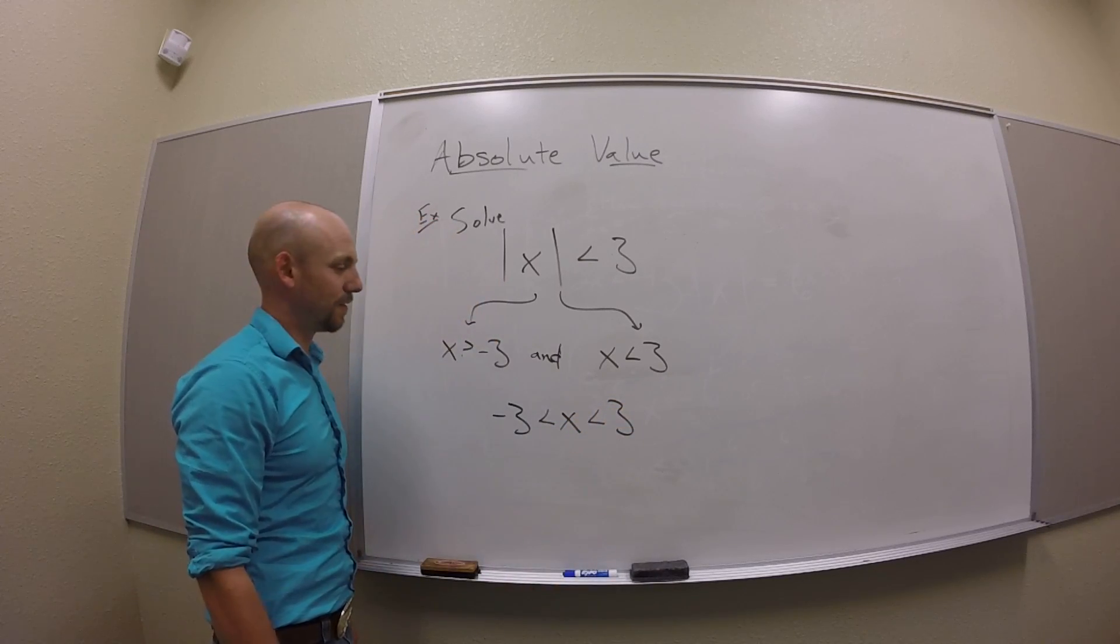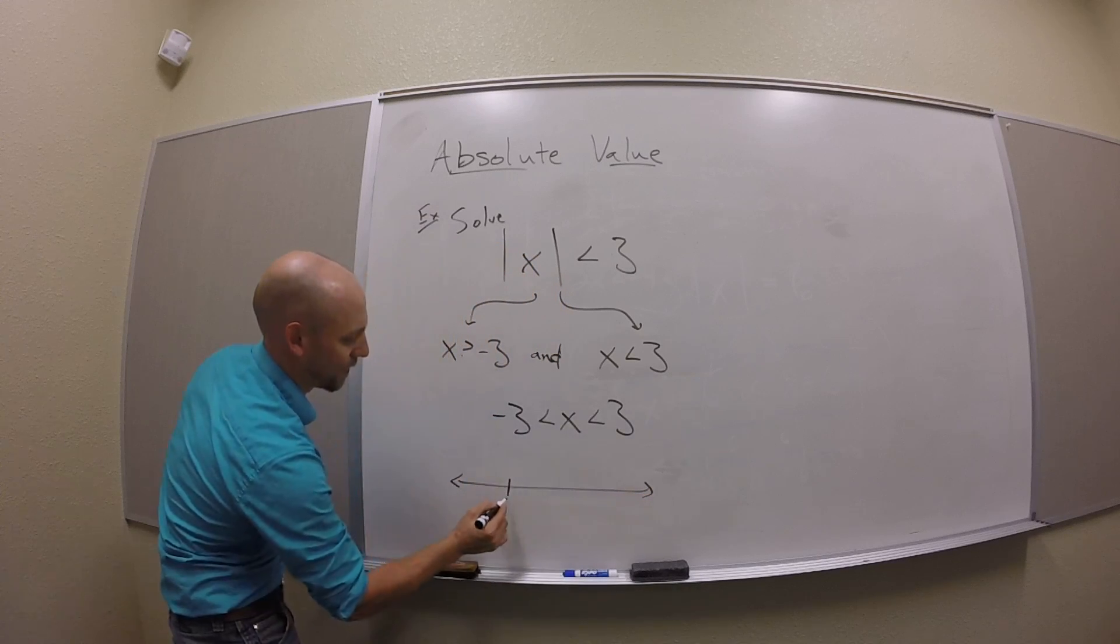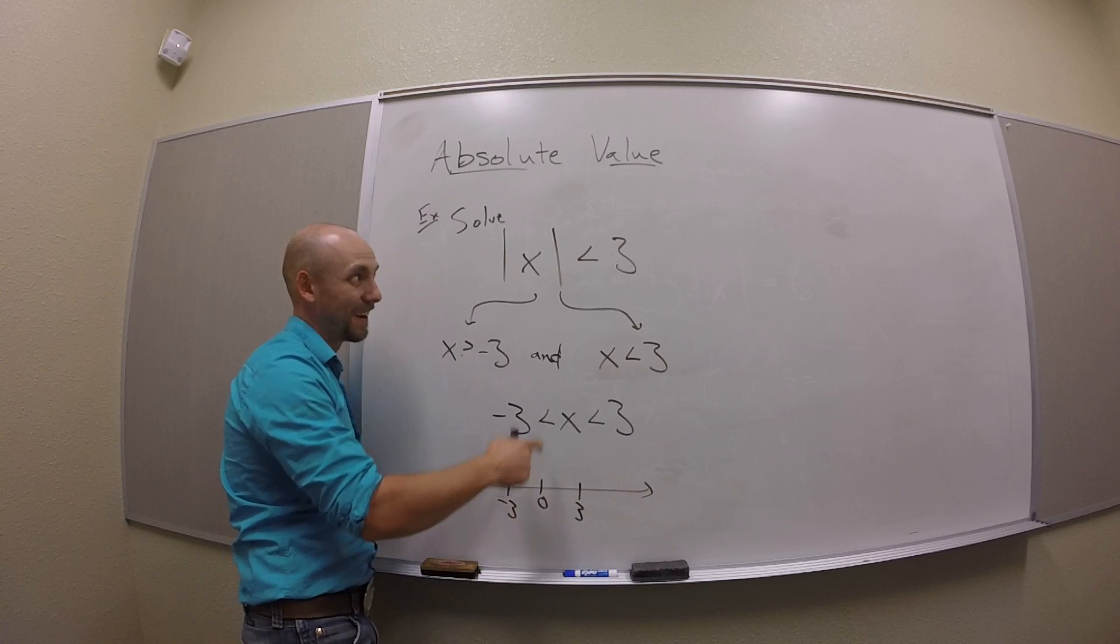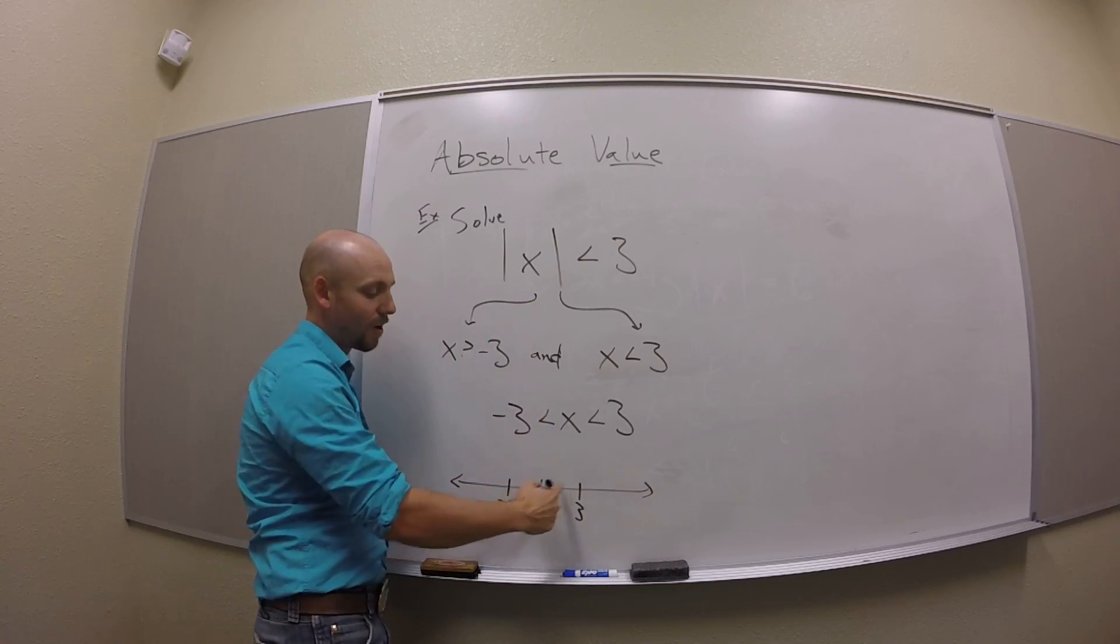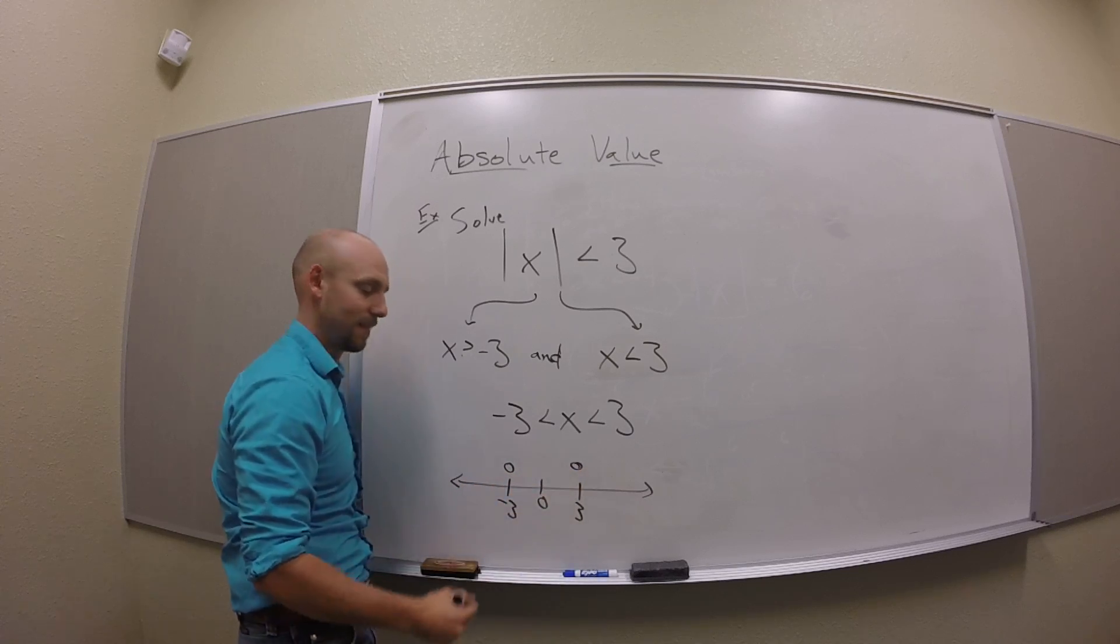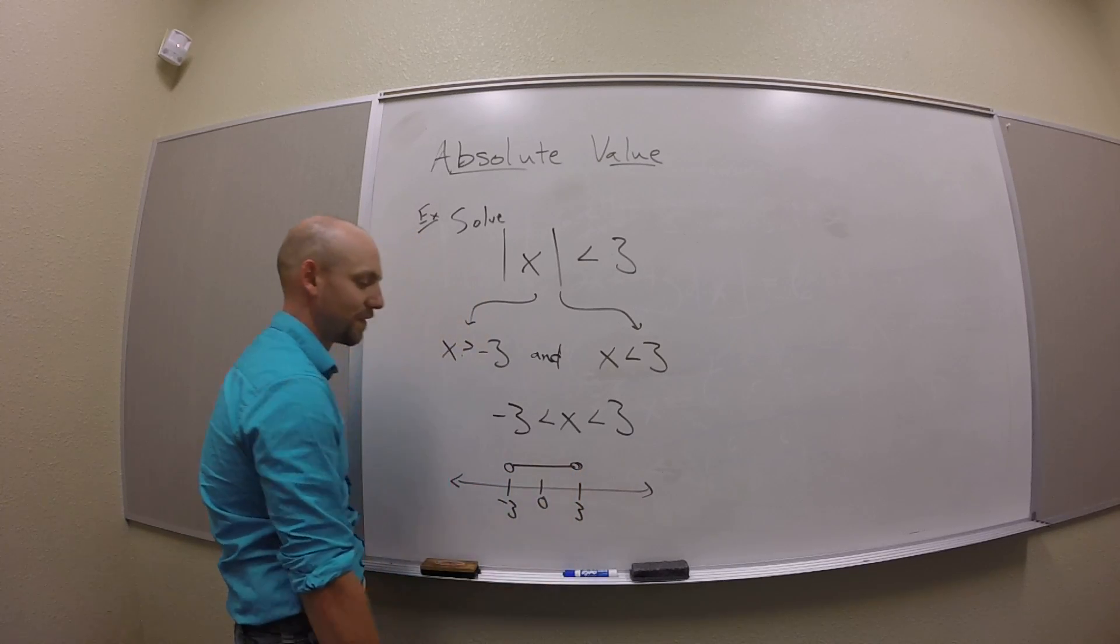And then I think I could write a number line. Maybe a number line would have been a good spot to start, because I could say, hey, from 0, you're only allowed to go 3 out. So that means you've got to be within these fences. So there's my stuff.